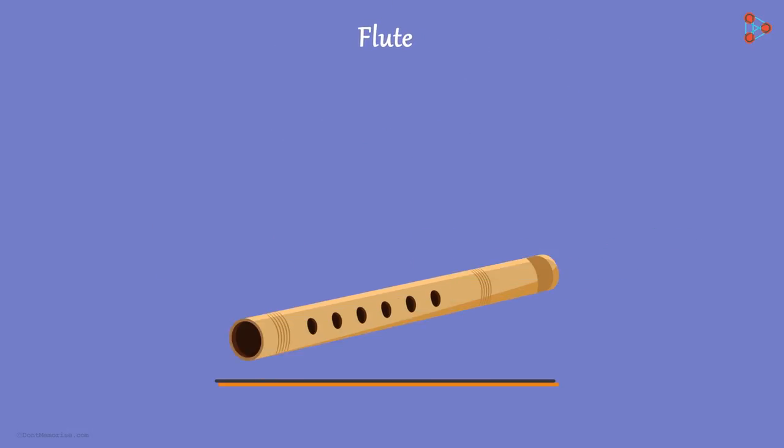What about the flute? How is the sound produced? In a flute, the vibrations are produced by the air column. When we breathe into its mouth hole, the air inside the flute starts vibrating and we hear the sound.